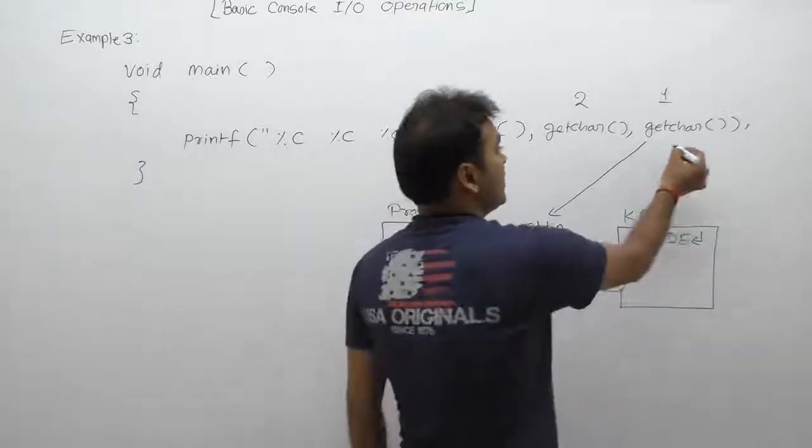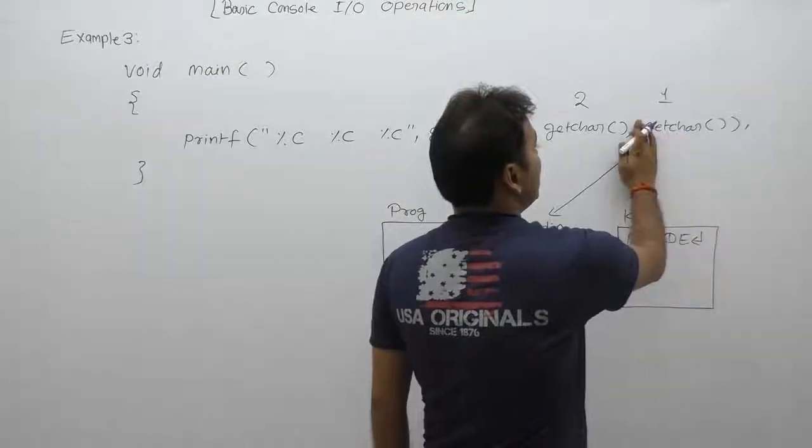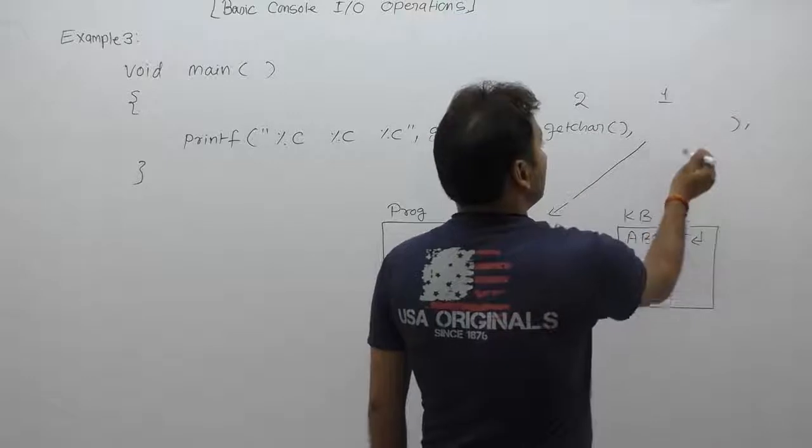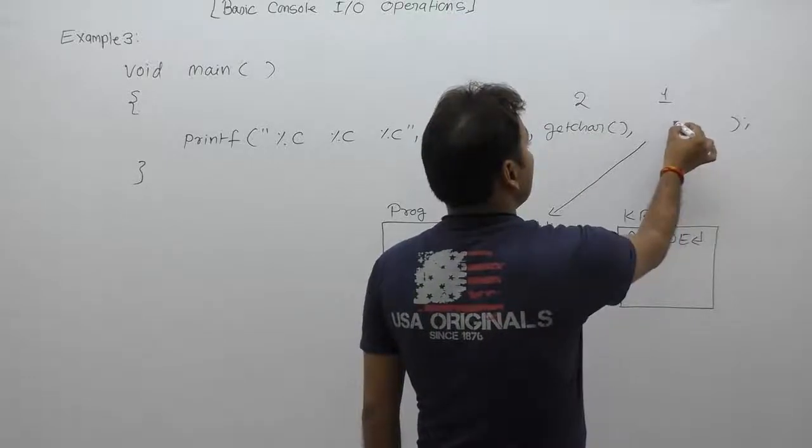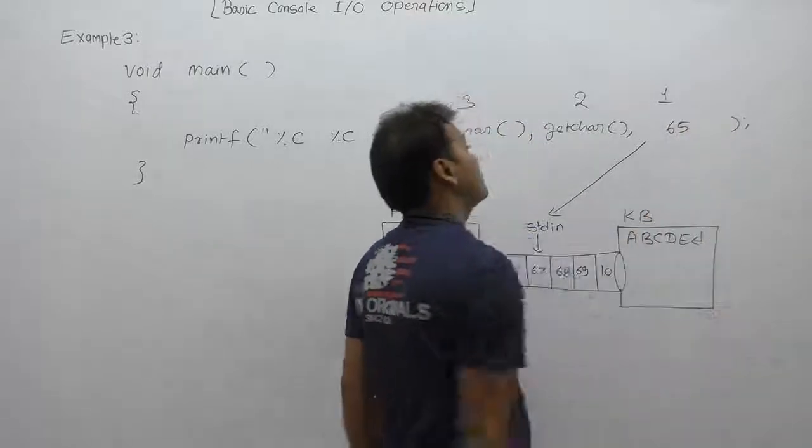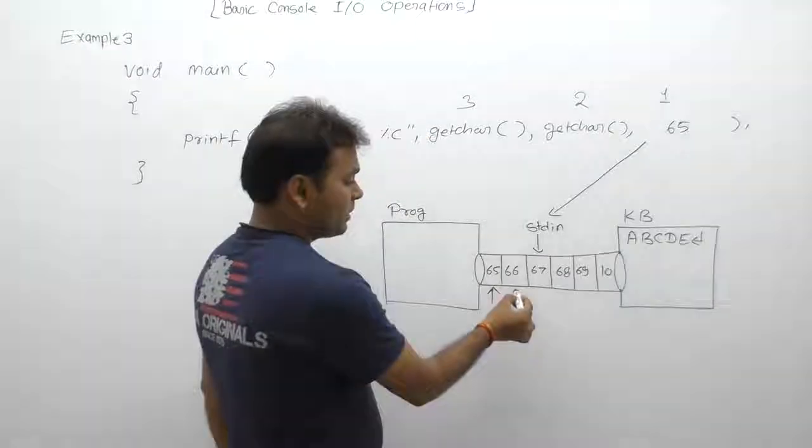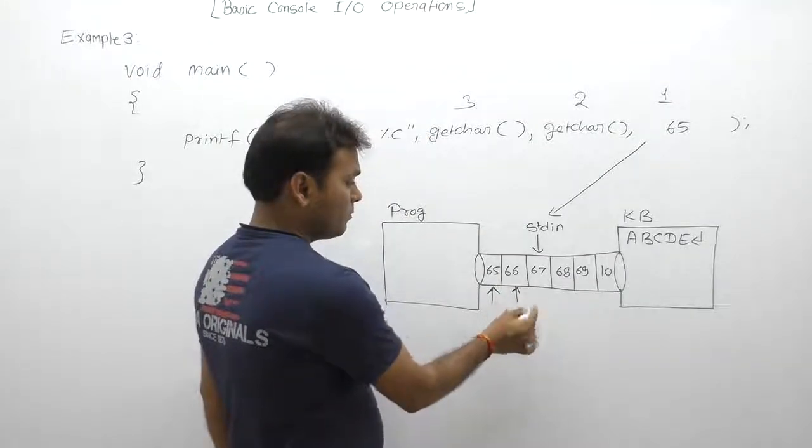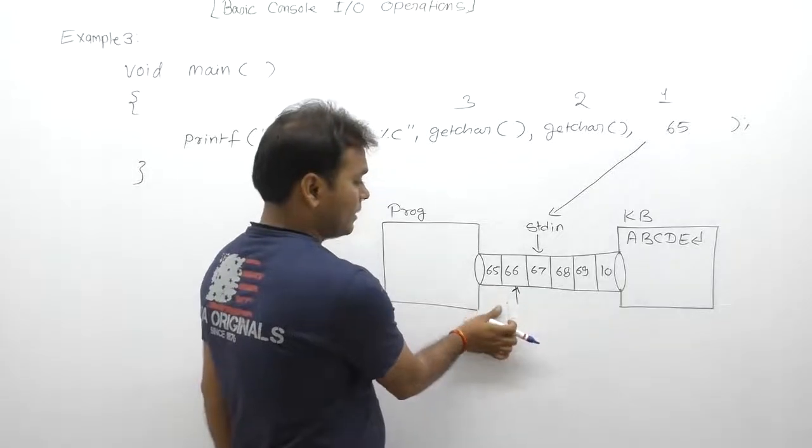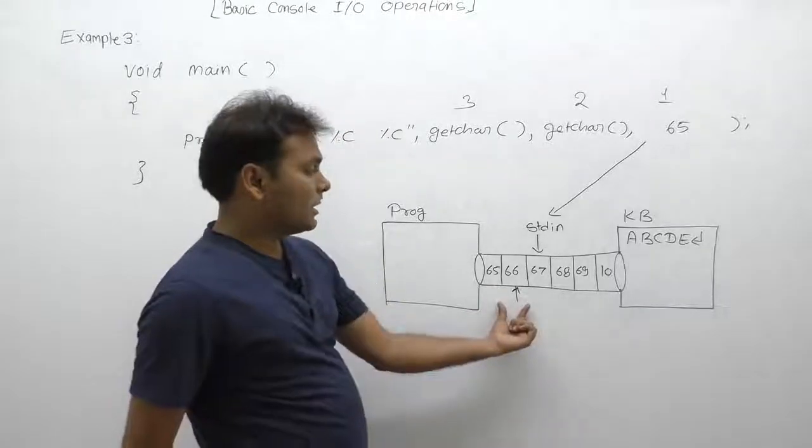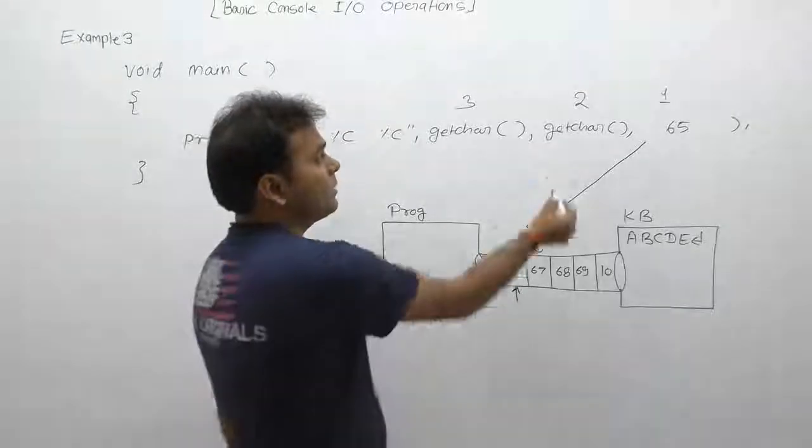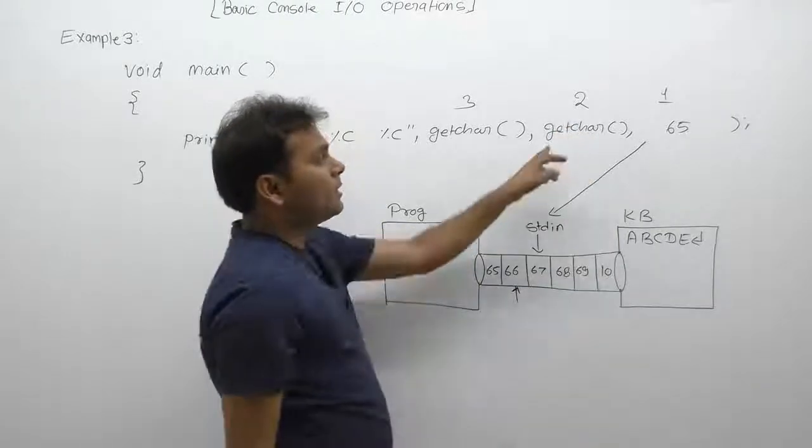After reading current byte, it will move buffer pointer to the next one. Now pointer is pointing on the second byte. Next time we call getchar() function, next time getchar() function call again will read data from the same place, from standard input, from the standard input buffer.